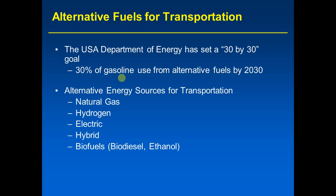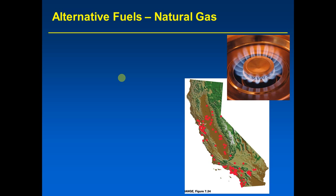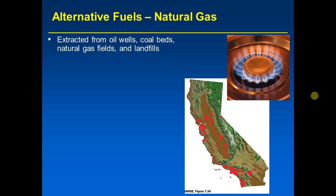Let's start with natural gas. Natural gas burning might look like what you'd see on your stove. We've been talking about how natural gas can be used for heating at home, space heating, water heating, cooking — but it can also be used for transportation. Natural gas can be extracted from oil wells; once all the oil has been removed, there can be natural gas left over. It can also come from coal beds, natural gas fields, and landfills — since landfills are one of the major sources of methane, and natural gas is mainly methane.